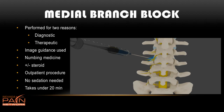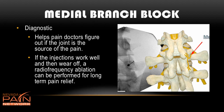When a medial branch block is performed, it's done for one of two reasons. One is diagnostic: if a pain doctor believes the pain is coming from a facet joint, they'll inject numbing medicine around the medial branches and possibly some steroid medication to stop the transmission of pain signals. If it works, that's diagnostic for that joint causing the pain. The other reason is therapeutic, as the injection itself can provide an average of three months of pain relief. It's an outpatient procedure, takes less than 20 minutes, and you don't need sedation.